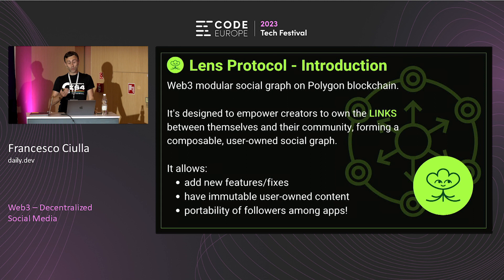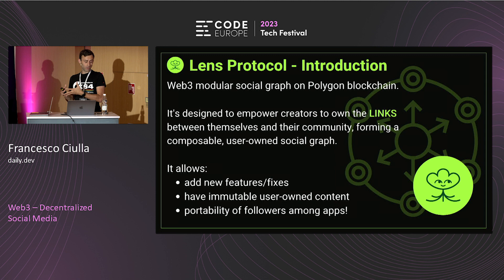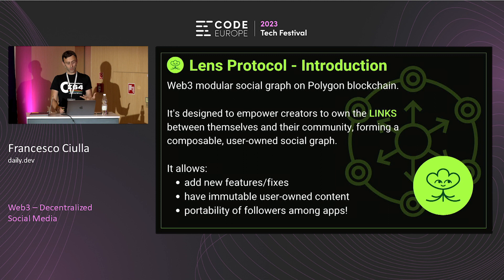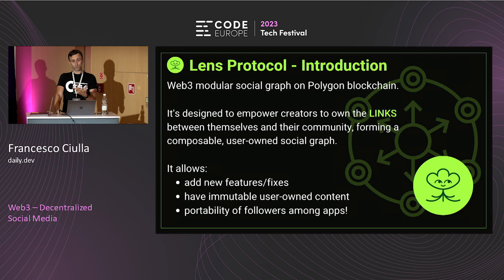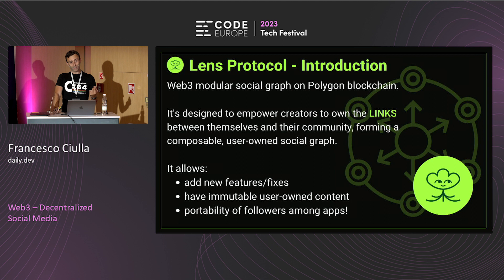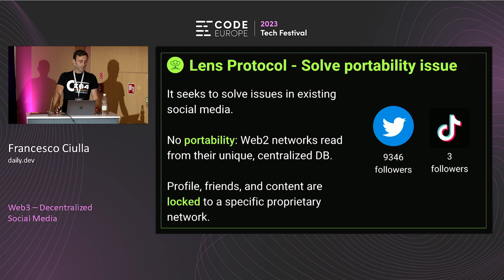Lens Protocol is designed more focused on the connection between the user, the community builder, and their audience — creating a more user-owned social graph. It allows three main things: first, the ability to add new features and fixes — I wish I had that on other social media like Twitter. Second, immutable user-owned content stored on the blockchain. Third, and probably the one that made me choose this presentation topic: portability of followers among different applications. Usually on social media we don't have portability — you have 10,000 followers on Twitter and if you start TikTok or YouTube you restart from zero.